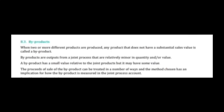Now let us look at byproducts in detail. When two or more different products are produced, any product that does not have a substantial sales value is called a byproduct. Byproducts are outputs from a joint process that are relatively minor in quantity or value. A byproduct has a small relative value compared to joint products but may still have some value. The proceeds from the sale of a byproduct can be treated in a number of ways, affecting how it is measured in the joint process account.